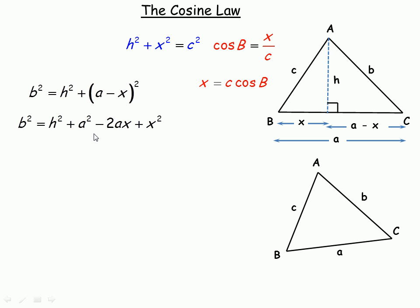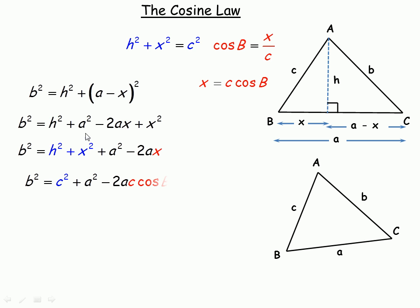Now we're getting close to the cosine law. We're going to make a couple of substitutions. I'll rearrange and write h squared and x squared together, then a squared minus 2ax at the end. Notice h squared plus x squared equals c squared — that's the first substitution. And x equals c cos B — that's the second substitution. So in place of h squared plus x squared, I put c squared, and in place of x I put c cos B. This gives us b squared equals c squared plus a squared minus 2ac cos B — that is the cosine law.